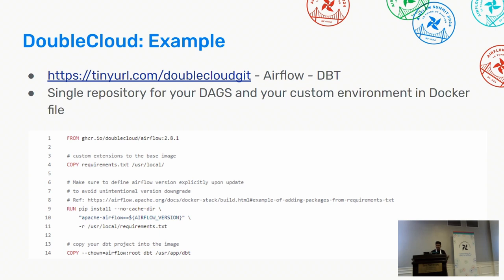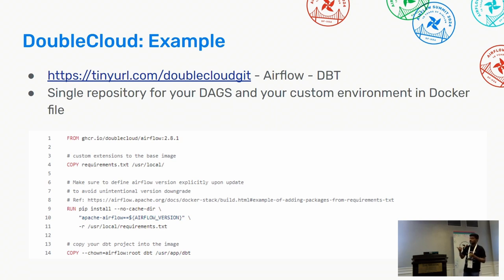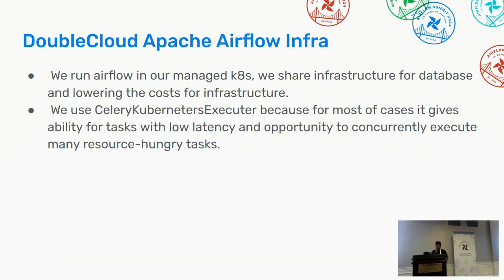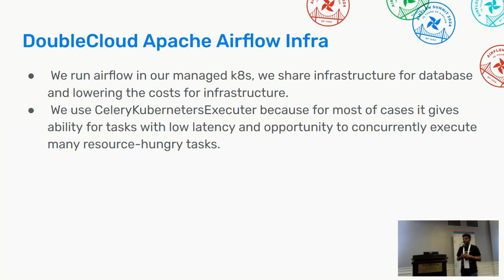Here's an example of a GitHub repository that explains a configuration of DoubleCloud managed Airflow, covering data ingestion with the DoubleCloud Transfer service using Airflow and dbt, and incorporating changes in custom Docker images. Our DoubleCloud Apache Airflow is based on a managed Kubernetes instance, and we use the Celery Kubernetes executor, given its performance for low latency when handling resource-hungry tasks.